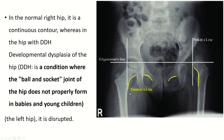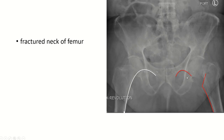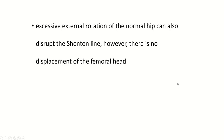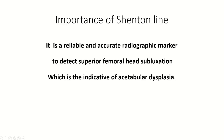In the normal hip, it is a continuous contour. In the hip with developmental dysplasia, this line is discontinuous. In a fracture neck of the femur, the Shenton's line is also discontinuous. Excessive external rotation of the normal hip can disrupt the line, but there is no displacement of the femoral head.